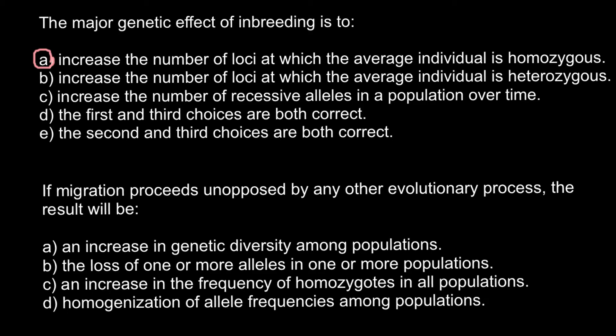Second question. If a migration process is not opposed by any other evolutionary process, the result will be: Answer A — an increase in genetic diversity among the populations. Answer B — the loss of one or more alleles in one or more populations. Answer C — an increase in the frequency of homozygosity in all populations. Answer D — homogenization of allele frequencies among the populations. The correct answer here would be D.